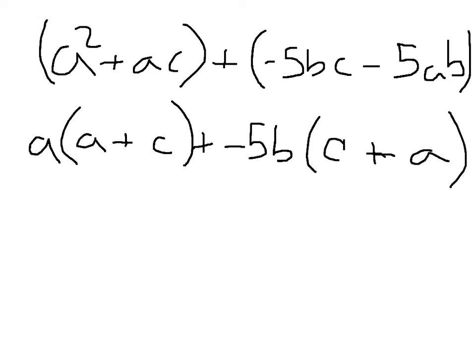Now that we have removed the greatest common factor from each term, we see that we have the c plus a here. And we're just going to rewrite this as a plus c, so that it matches this term. So that eventually in our final step, when we come to an answer, we can combine like terms to arrive at the answer.